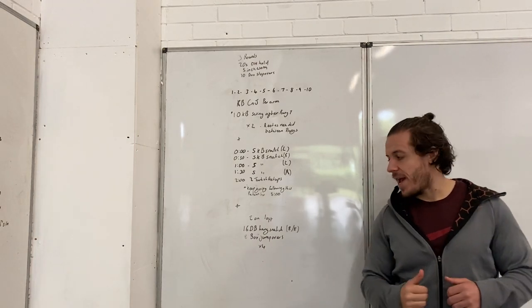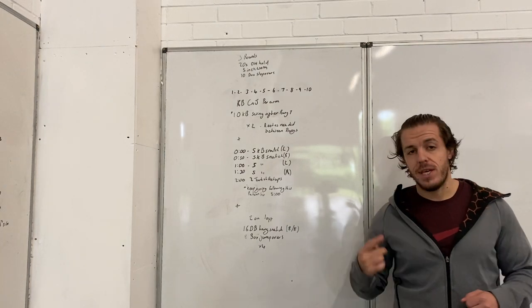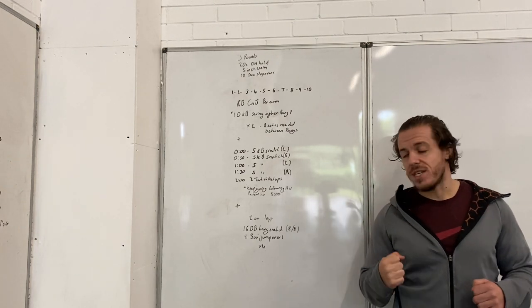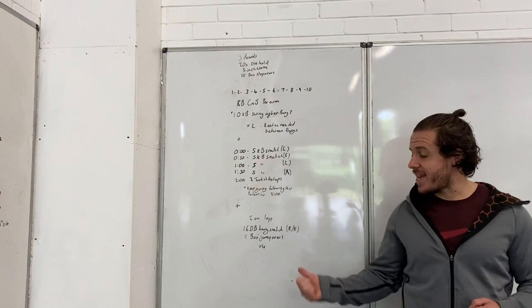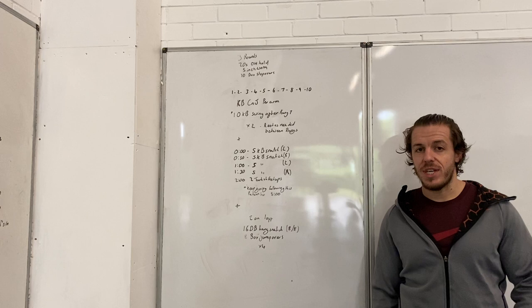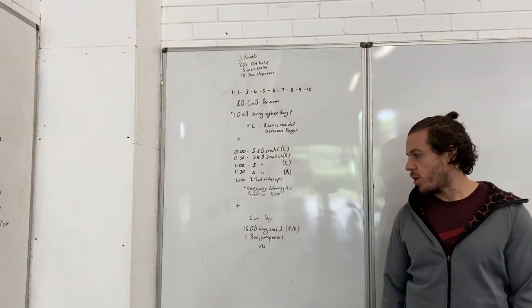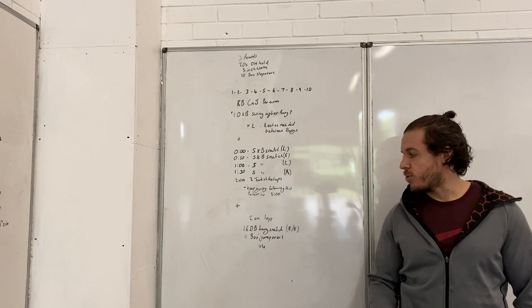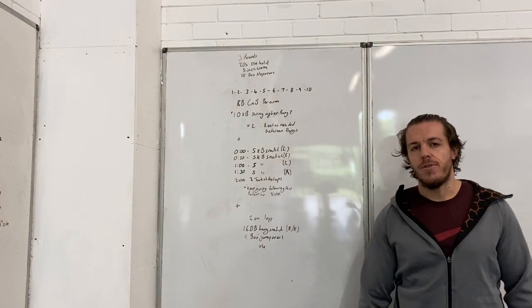And then finally guys, we're going to finish off with an interval based workout. We're going to go hard for two minutes, rest for one. You're going to do 16 dumbbell hang snatches - that's eight on each arm - and eight box jump overs. As many rounds as possible in two minutes, one minute rest, four times through.